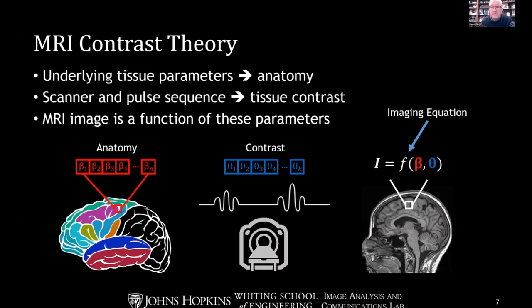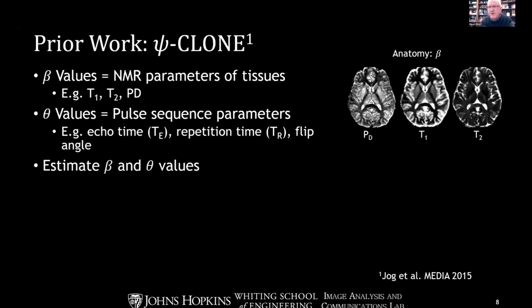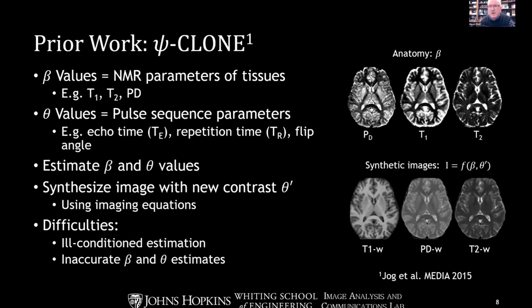This motivated our work from 2015, where we thought: if we know the beta values — specifically NMR parameters such as T1, T2, and proton density — and if we could estimate them, and if we know the theta values (echo time, repetition time, flip angle, and so on), then we can simply change the theta value to something else and synthesize arbitrary images using an imaging equation. Though there was some success, we discovered difficulties in inverting the imaging equations to find the underlying anatomy and theta values, which were unknown to us.